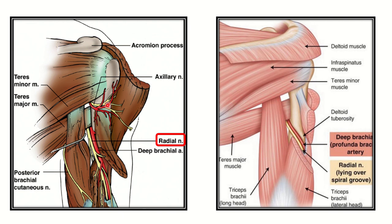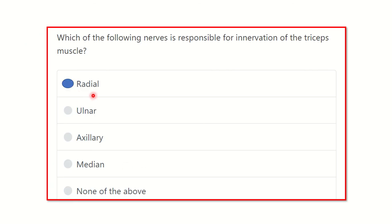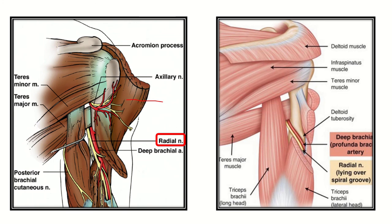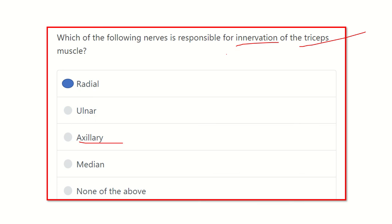We can see the axillary nerve, which lies in the quadrangular space, is positioned more superiorly, while the main bulk of the triceps lies below. Our final answer is the radial nerve — it provides innervation to the triceps muscle. The axillary nerve, as seen here, supplies the deltoid muscle, not the triceps. The ulnar nerve and median nerve are nerves of the forearm and hand; they do not provide any muscle innervation in the arm. Thank you all.